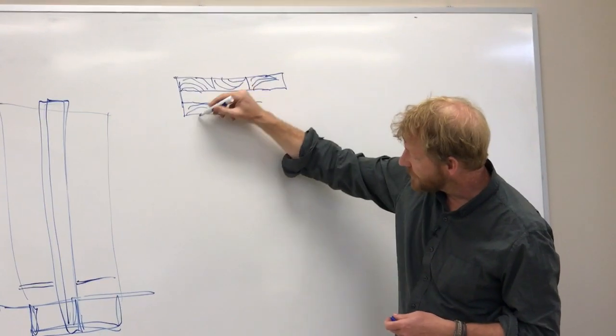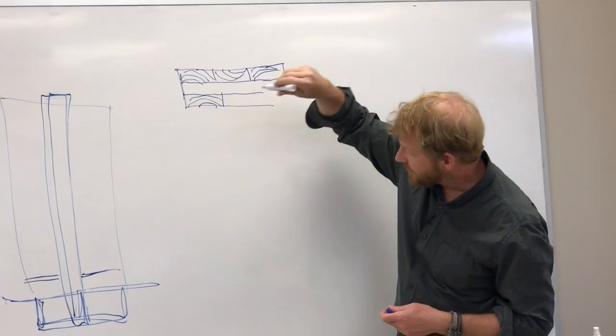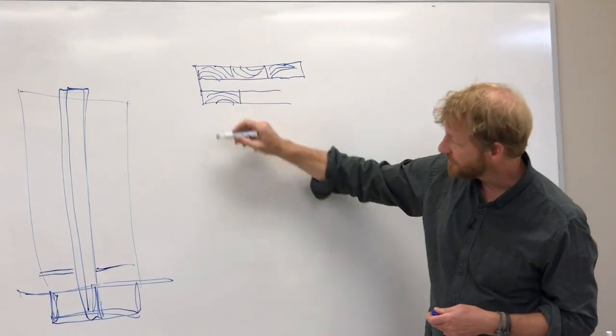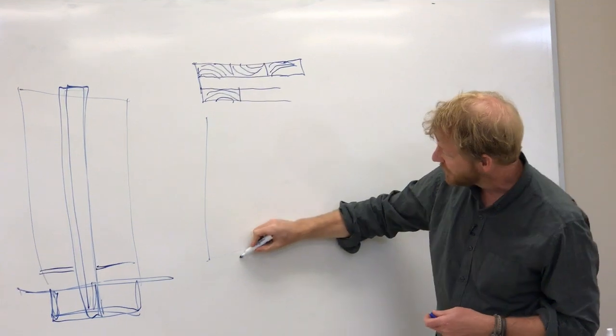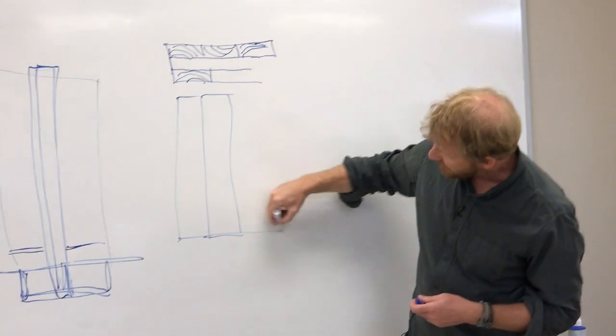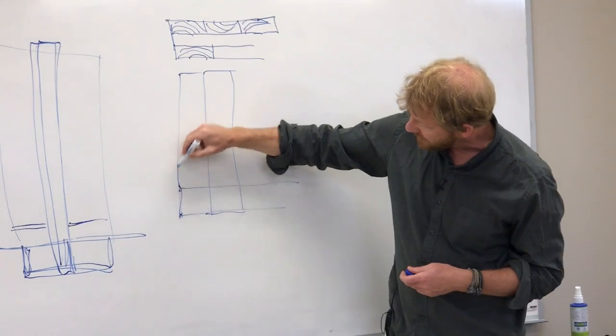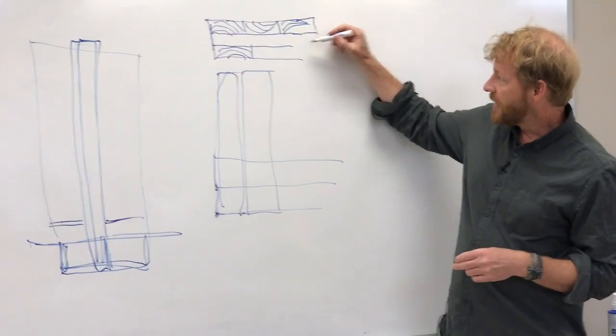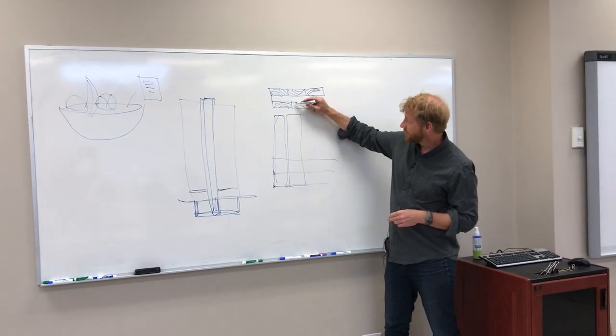And then on the bottom, same thing. These boards here are going this way, boards in the middle are going this way, these boards are going this way. So if I look down on the top of this panel, there's a bunch of two-bys going one way, and then a layer of two-bys going the other way, and then another layer of two-bys going on top.